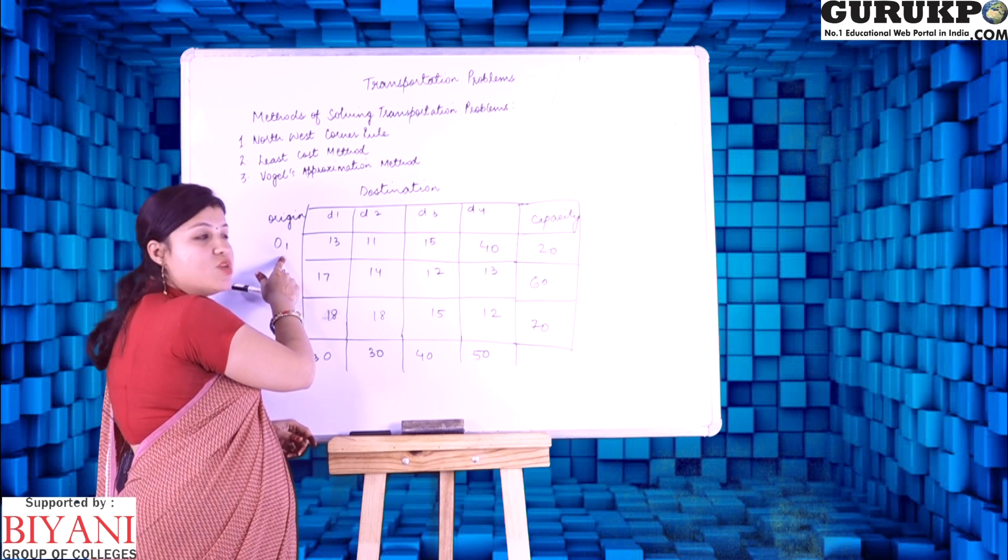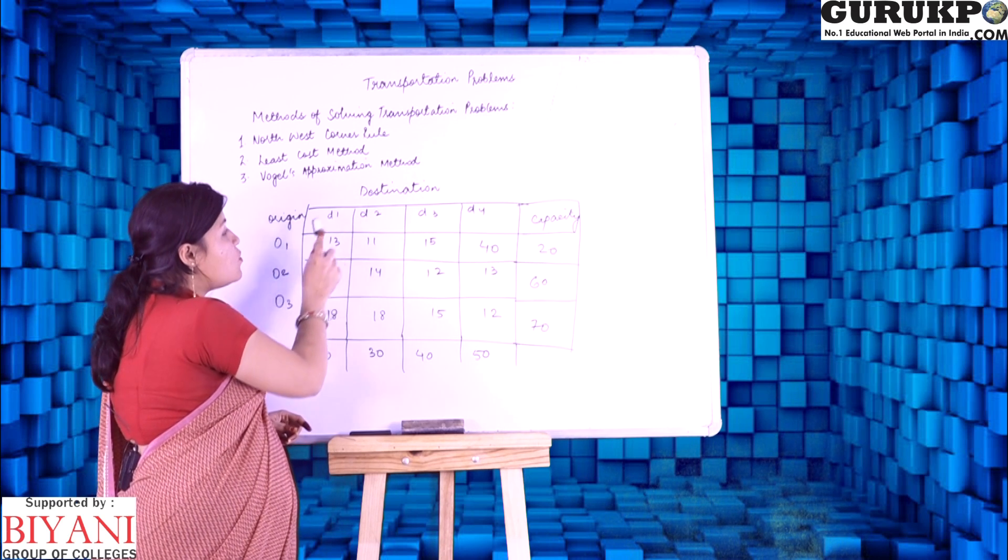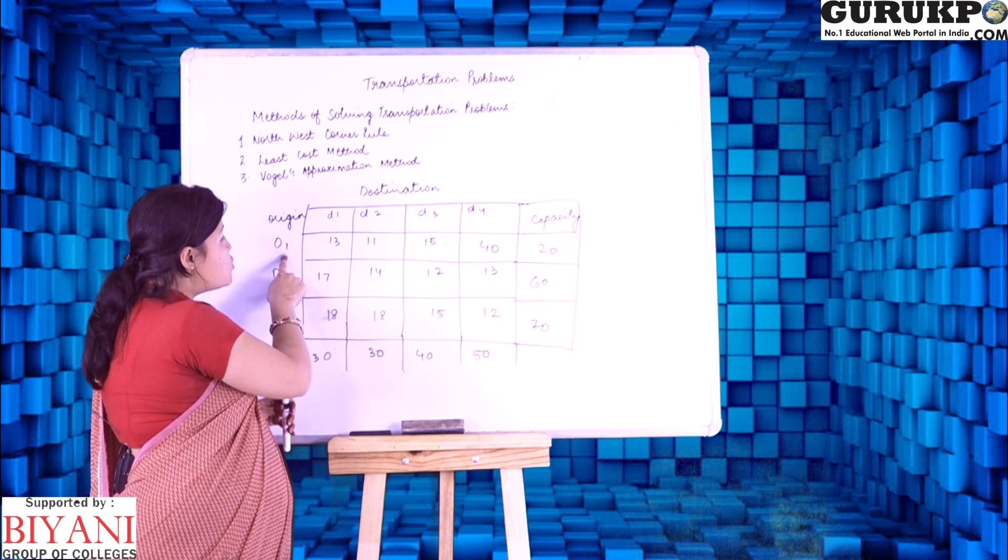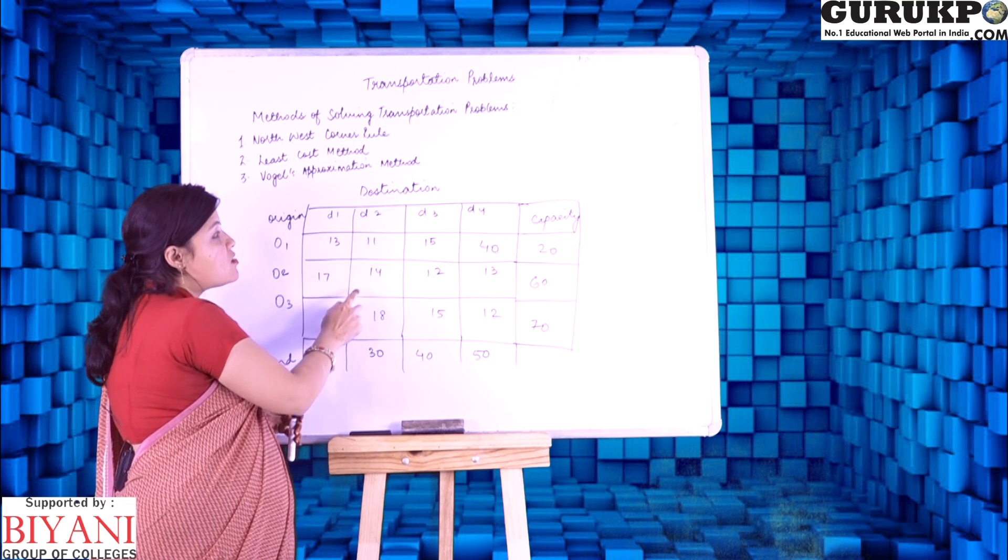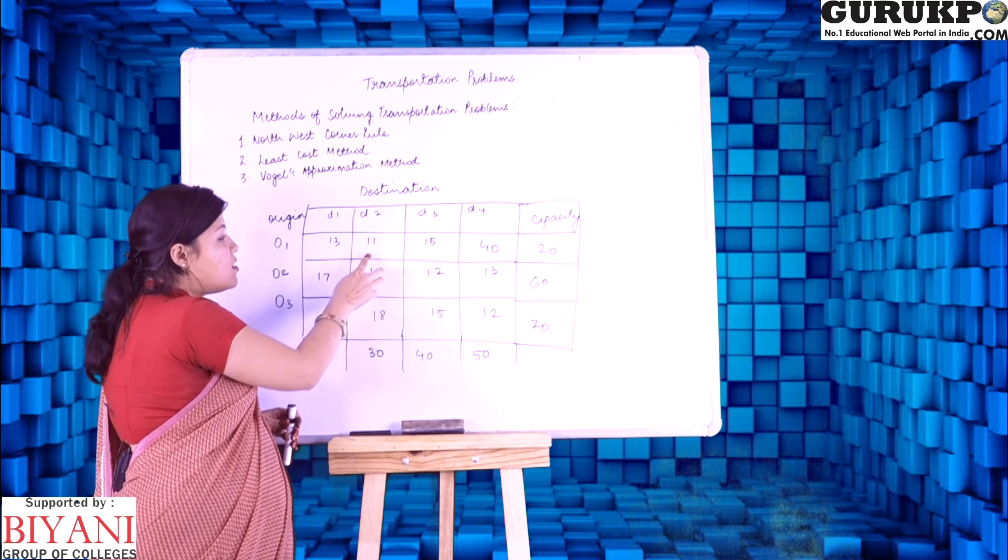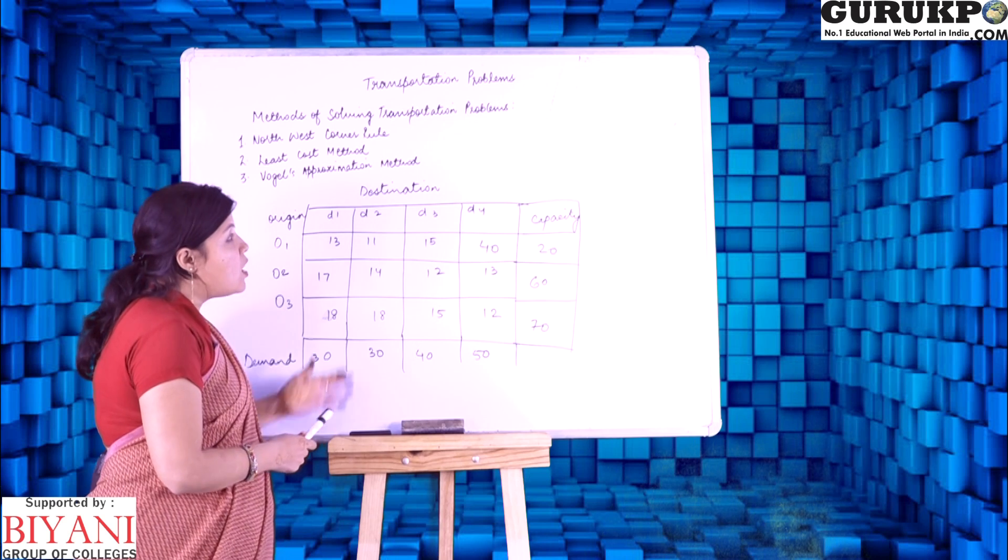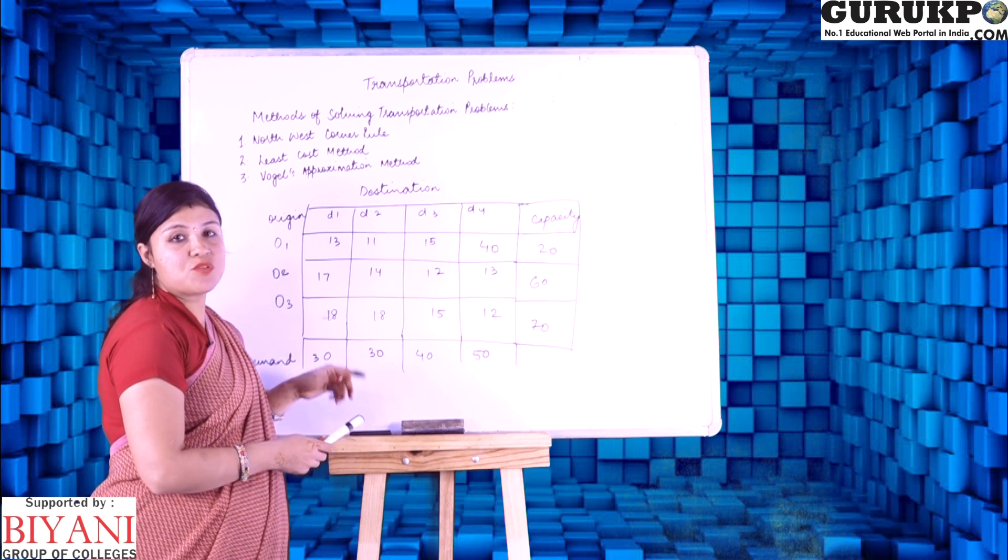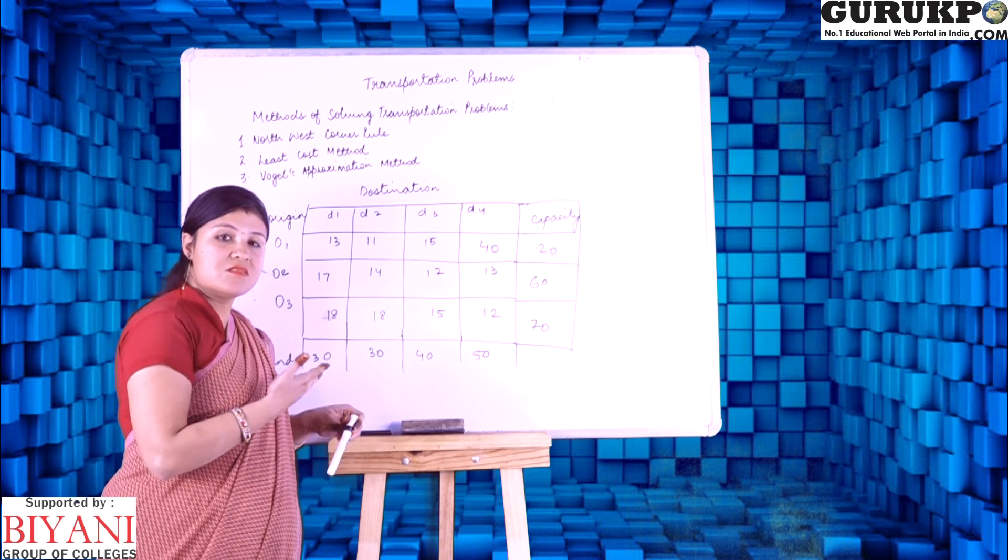That is, from O1 origin, the cost to destination D1 is 13 rupees. From O1 origin, the cost to destination D2 is 11 and so on. Now, how to solve this transportation problem by least cost method? Just have a look.